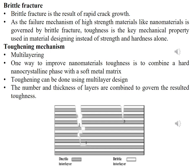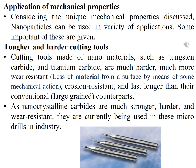In the figure, the gray color represents the ductile layer and the white layer represents brittle material. Combining these ductile and brittle layers produces tough material with toughening properties. Considering these unique mechanical properties, nanoparticles and advanced materials can be used in a variety of applications in different fields.